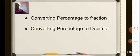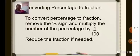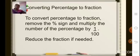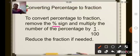Now we have already learned about fractions and decimals. So in this topic, we are going to learn how to convert percentage to fraction and also conversion of percentage to decimal. To convert percentage to fraction, we will remove the percent sign and multiply the number by 1 upon 100. And further, if needed, we will reduce the fraction.